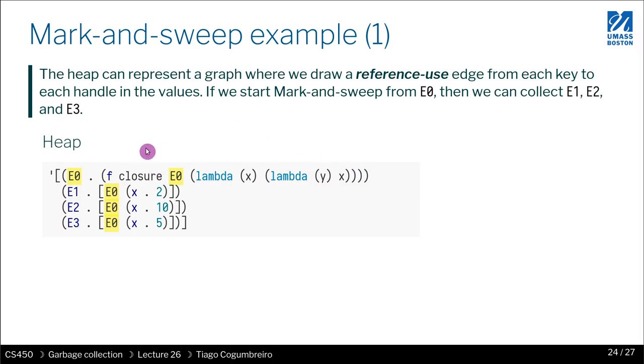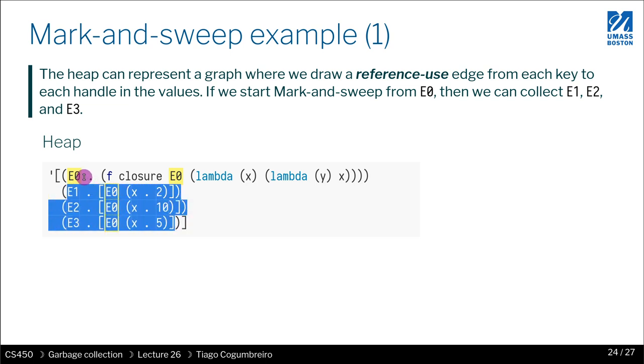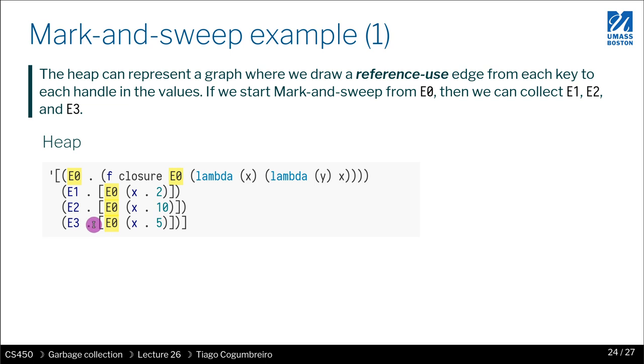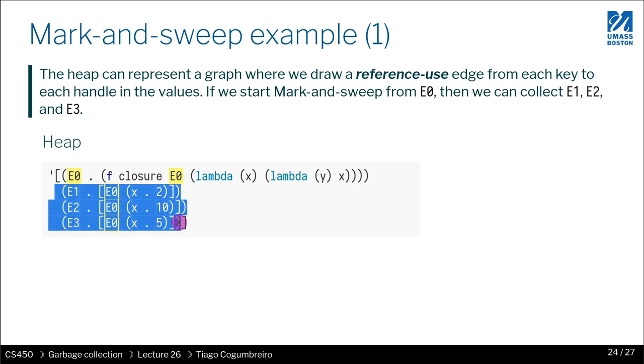So let's look at our first example. If we start from E0, then we only have one reference to itself. And that means that E1, E2, and E3 are not reachable via E0 and could be safely reclaimed.